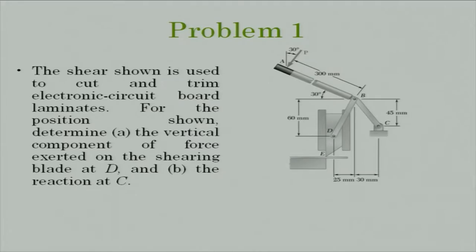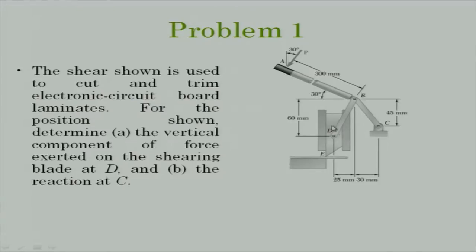Let us start with problem number 1. We will do it for around 15 minutes. We have a simple mechanism - a device used to trim various things. This is the blade, the vertical portion, and this is a frictionless guide. The knife is connected by a two-force member DB to the full member ABC. If you apply a force here, that force gets transmitted and at point E, the force gets transmitted to the plate which then gets sheared.